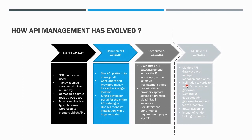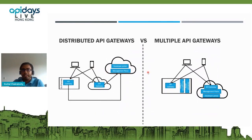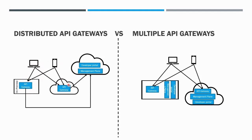At a very high level, the distributed API gateway setup has a common management plane, a common developer portal, and separate logical gateways running on-premise or on cloud providing APIs to different consumers. In the newer multi-gateway setup, there are different API gateways with different planes and potentially different developer portals, each serving APIs to consumers.